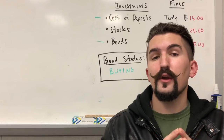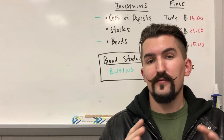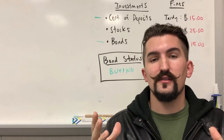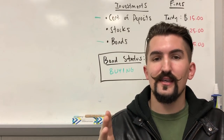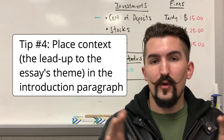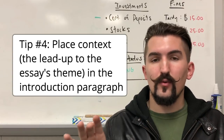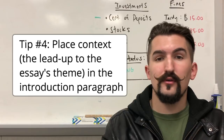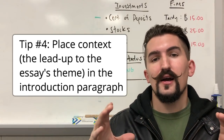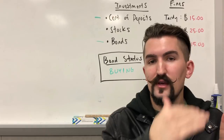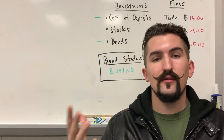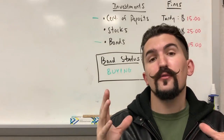To get the context point, in the introduction paragraph you're going to focus three to five sentences on setting the context. To know what the context is, look at the question and identify whatever the theme is — whether it's political, economic, social, or something else. Once you identify the theme, you can provide context for what led up to the theme in the essay question.